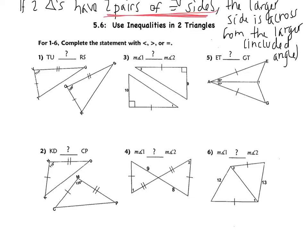Looking at the first figure, we have two triangles. We have one pair of sides congruent, and another pair of sides congruent, so the hinge theorem applies. I have an angle of 111 and an angle of 108. The larger angle means this is going to be the larger side.